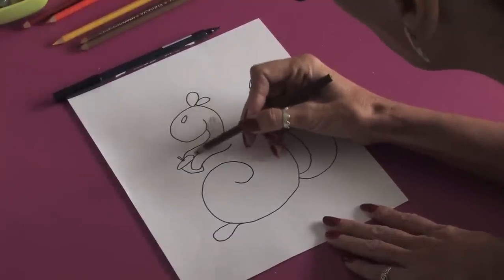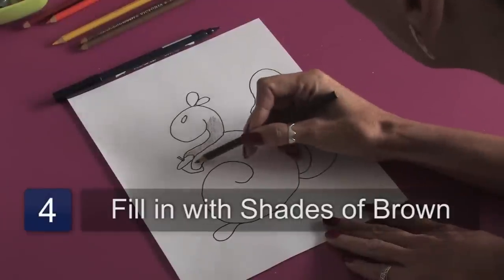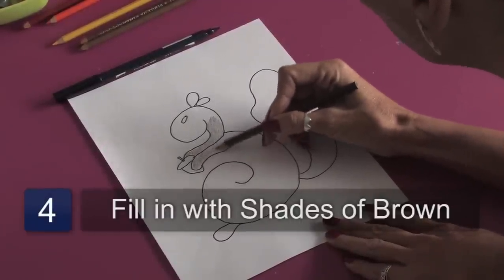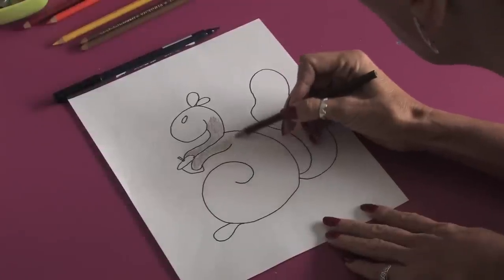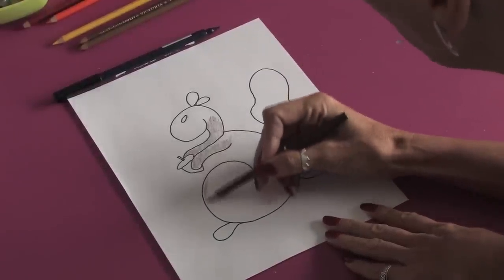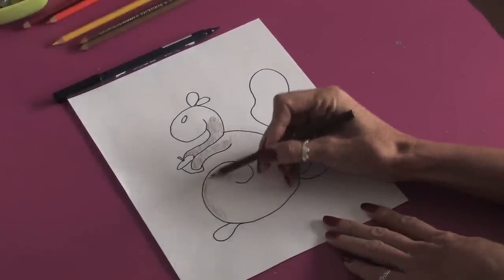You can see how quickly you can get that filled in with a nice brown. Come down and do the paw, and you can just continue on in this fashion, doing different areas, getting in a little bit of the body.